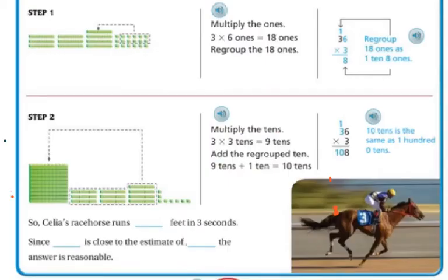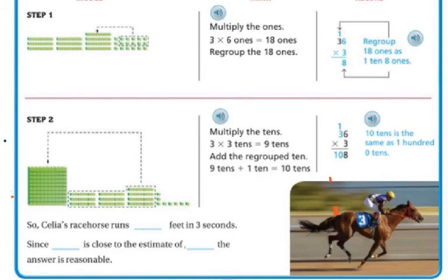Now step 2 is now I'm going to multiply the 3 times the 30. 3 times 30, right? And 3 times the 30 is 9, plus I have my 1 that I regrouped, so I'm going to get 10. So it's going to be 108.